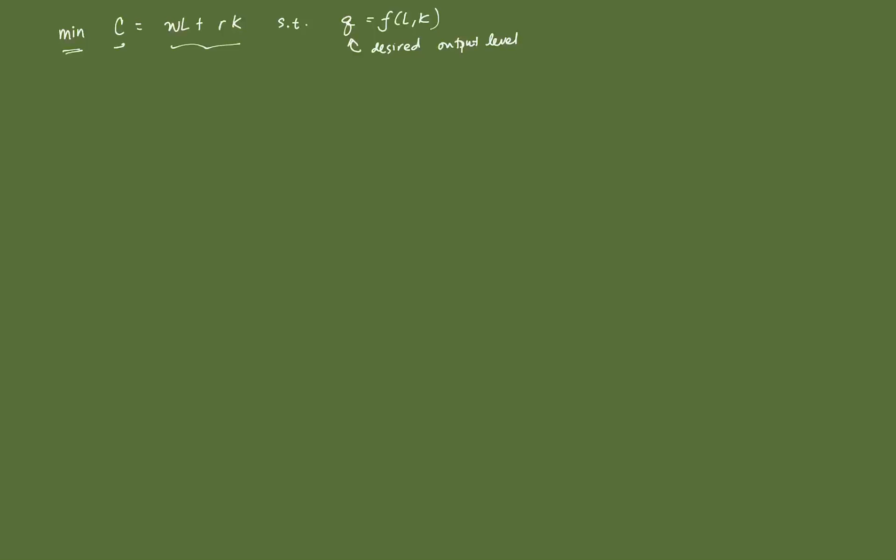So, if we assume that the production function is twice differentiable, then the firm's problem is, so what we want to do is we want to build the Lagrangian, that's min. We want to minimize our cost, that's WL plus RK, subject to our constraint. So, lambda times Q minus F(L,K). Now, this is our Lagrangian function, our main Lagrangian for cost minimization.